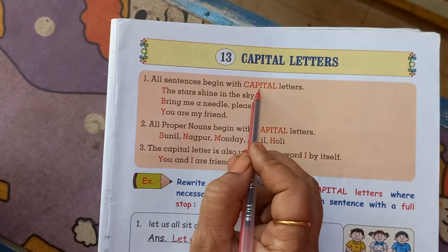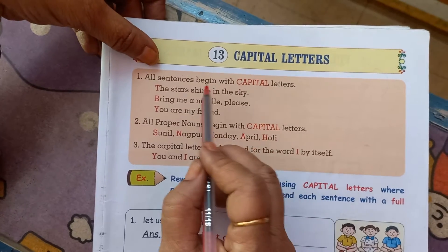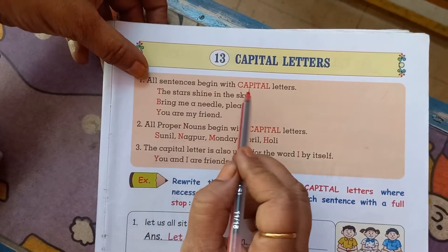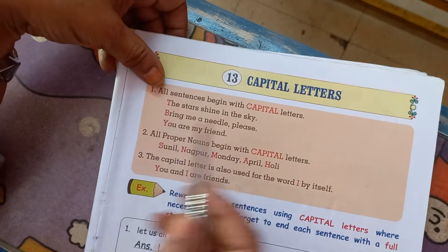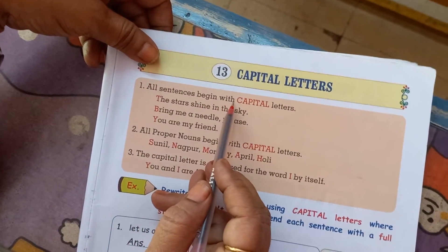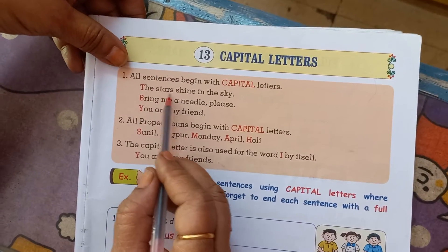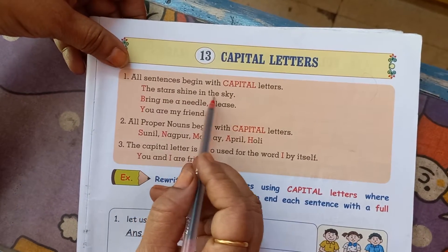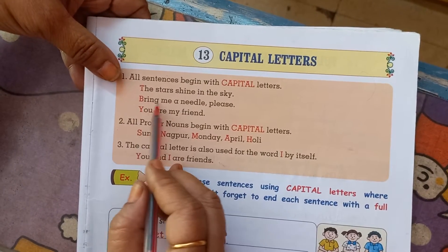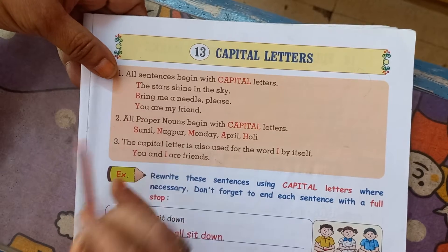All sentences begin with capital letters. Manje kai aplala kutla hi sentence chi surwa jia hai, ti nahi mi capital letter ne karai chaste. For example, 'The stars shine in the sky.' So T should be capital. 'Bring me a needle please.' B should be capital.